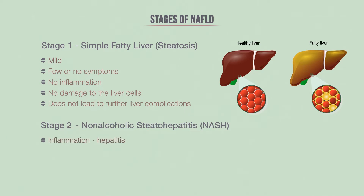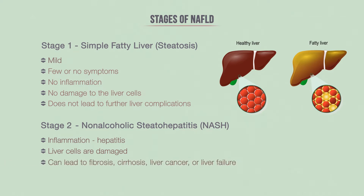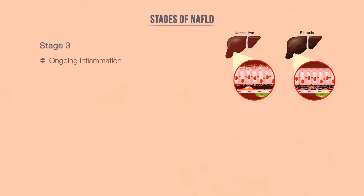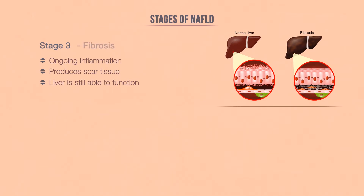The second type is labeled as non-alcoholic steatohepatitis, or NASH. In this stage, there is inflammation, referred to as hepatitis. The liver cells are damaged in addition to containing extra fat, and it can lead to fibrosis, cirrhosis, liver cancer, or even liver failure. The third stage occurs when the inflammation produces scar tissue around the liver cells and blood vessels, but the liver is still able to function properly. This is known as fibrosis.